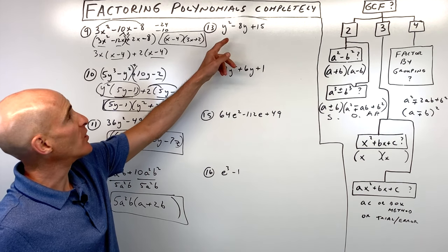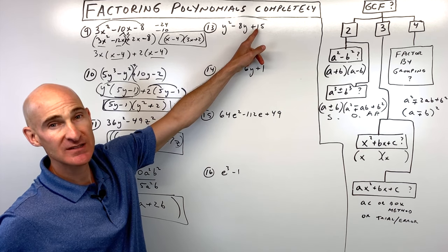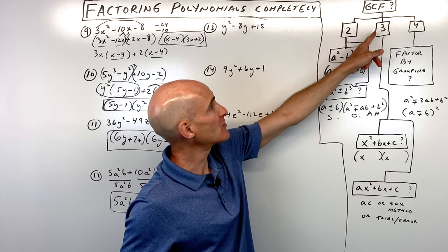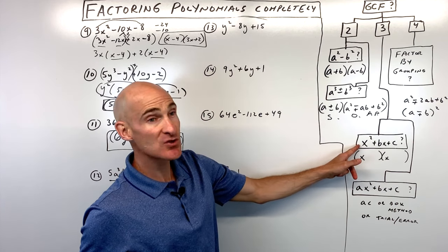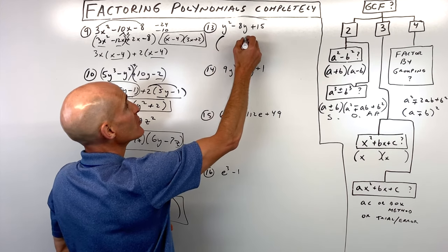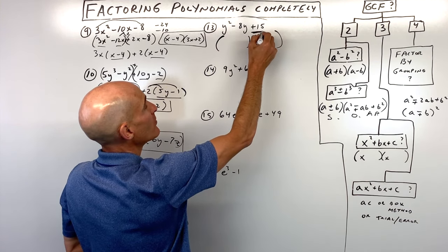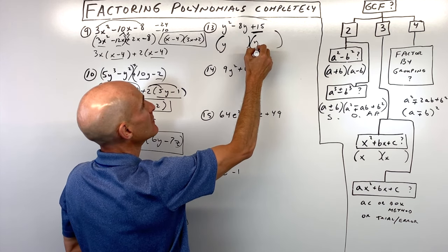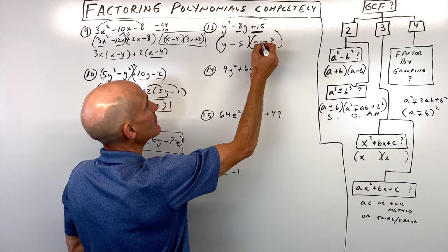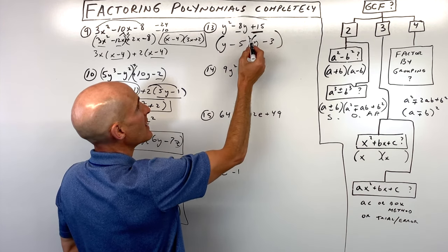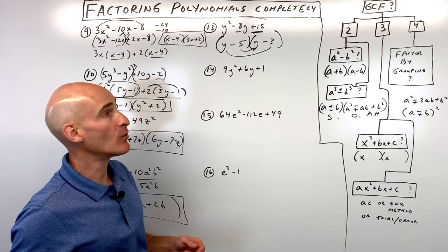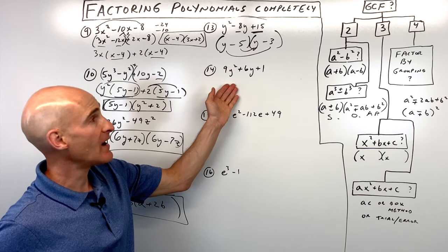Number thirteen, y squared minus 8y plus 15. There's not a greatest common factor, we have three terms, and the leading coefficient is 1. What two numbers multiply to 15 but add to negative 8? That's going to be negative 5 and negative 3, because negative 5 times negative 3 is positive 15, and negative 5 plus negative 3 gives negative 8. So y minus 5 times y minus 3. We can't factor further — fully factored.